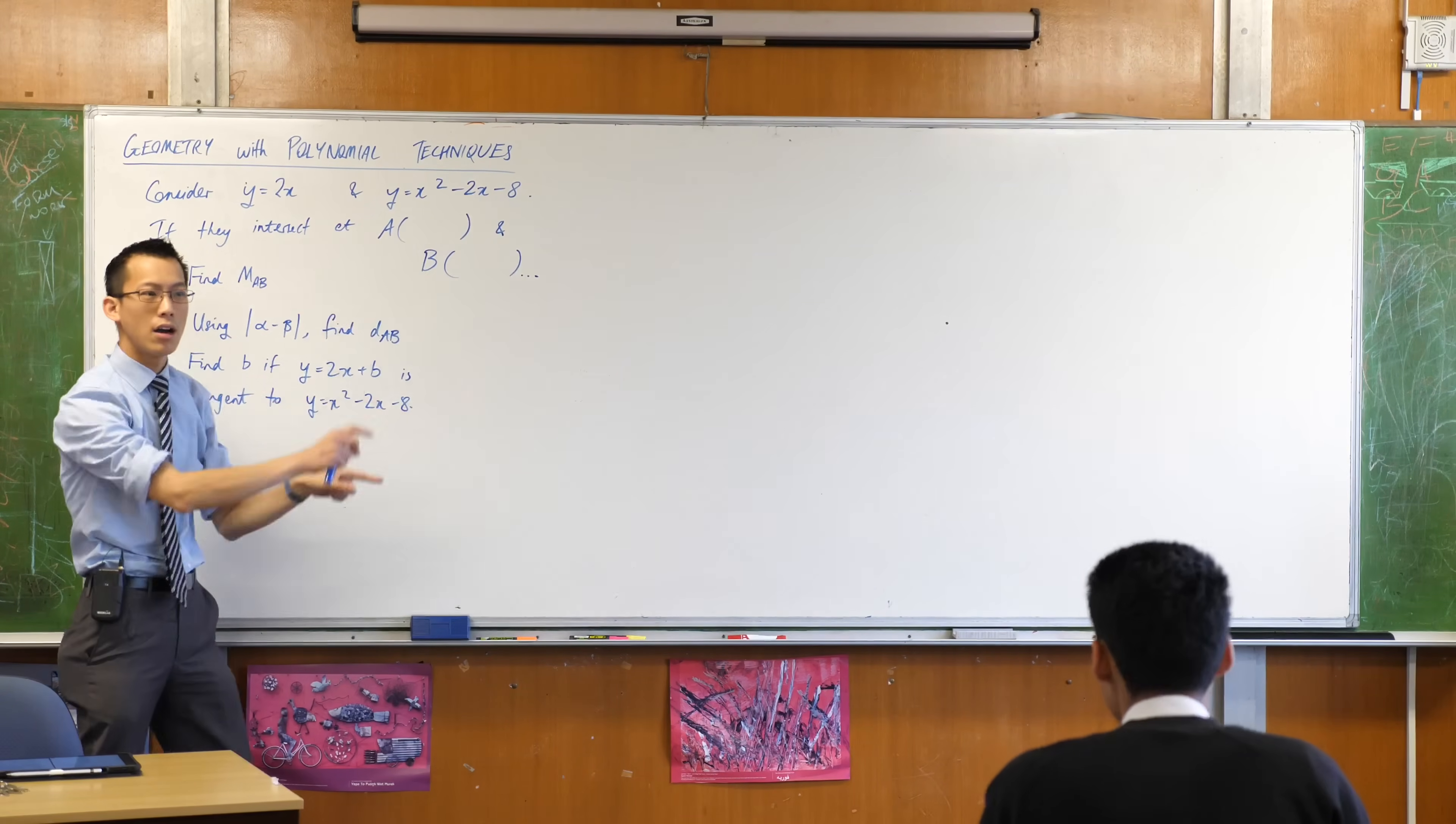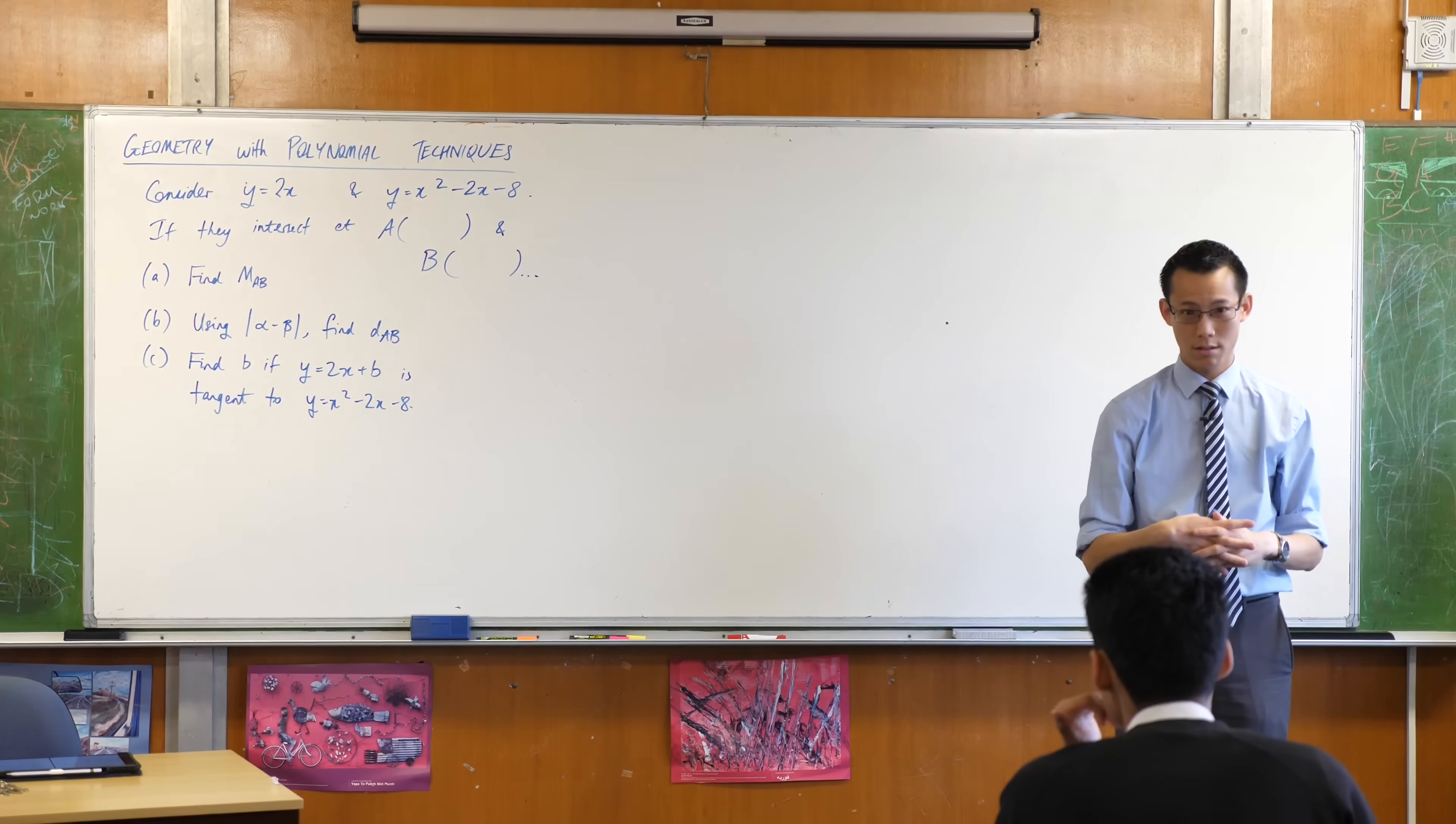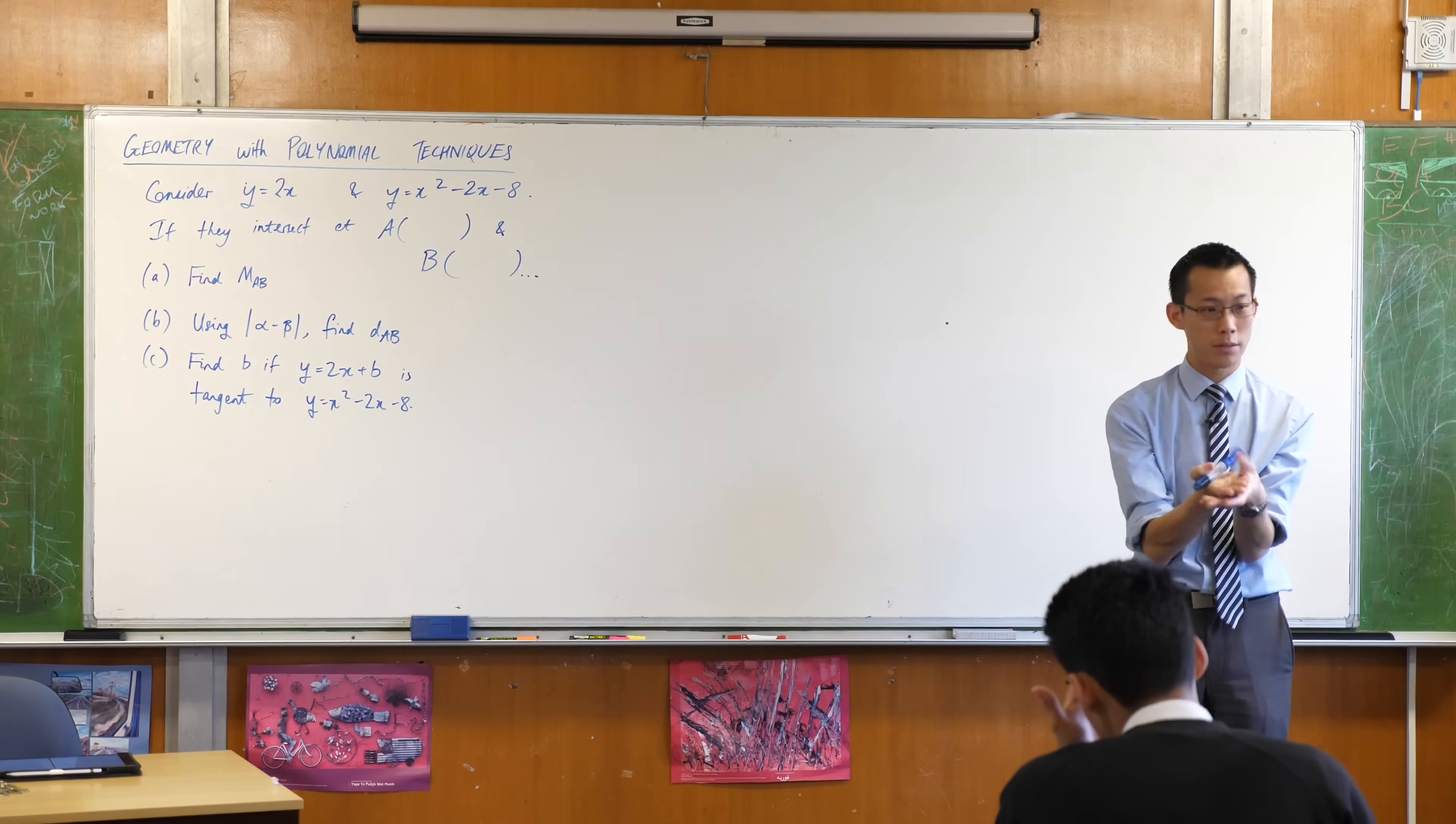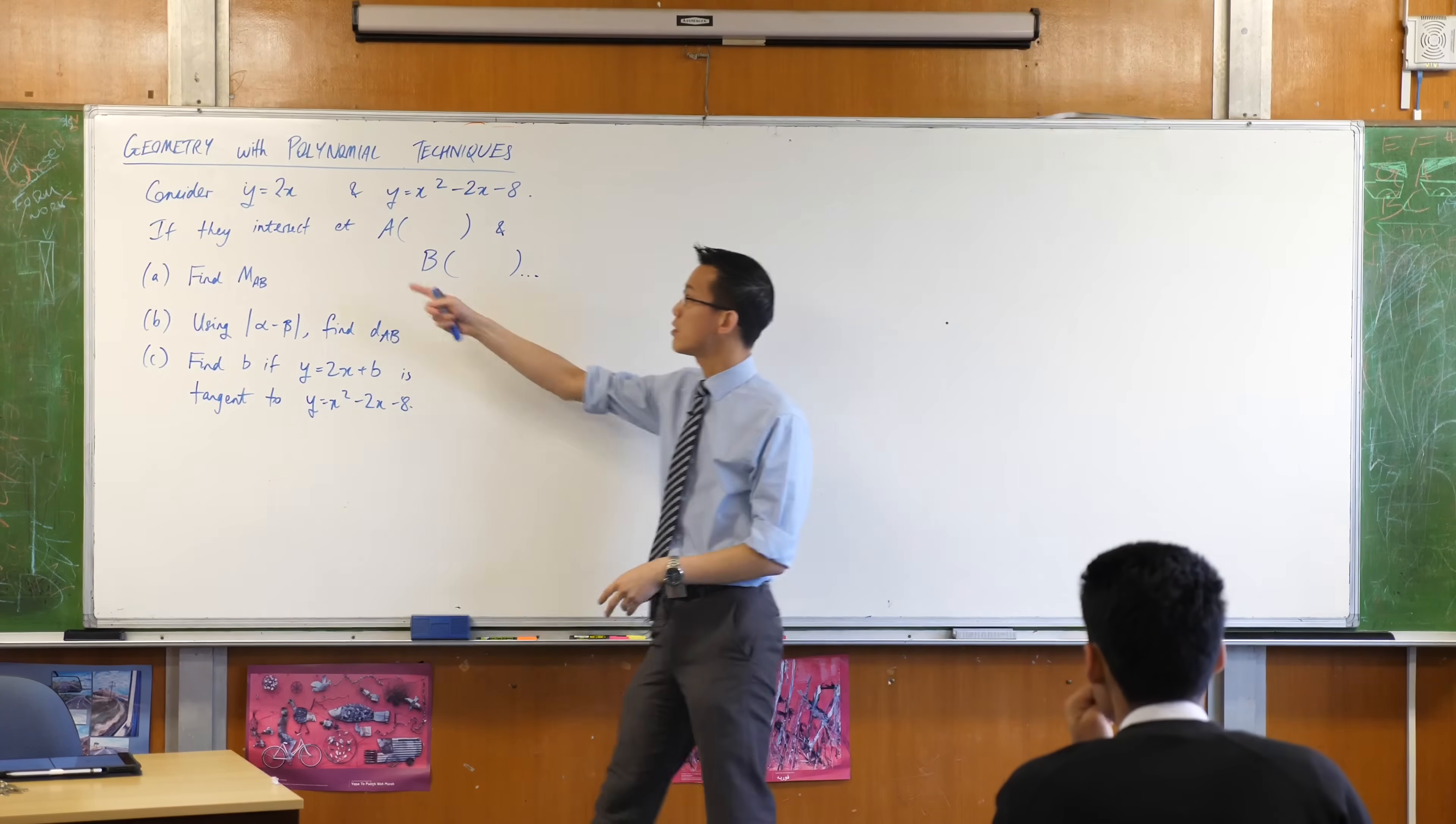You've got degree one and degree two. When you put them together and solve simultaneously, what degree will we have? It will be degree two. That makes sense because you basically have 2x equals that, and that's a quadratic.